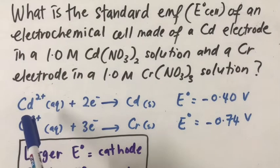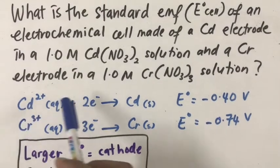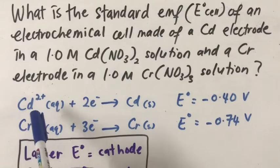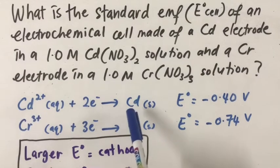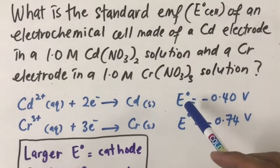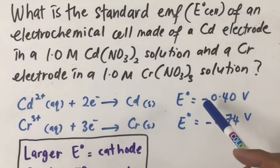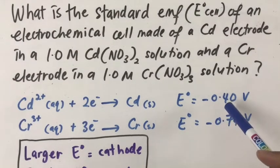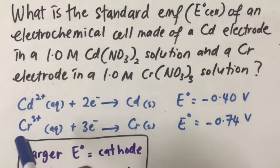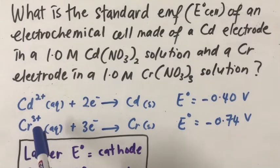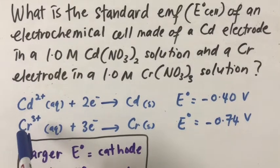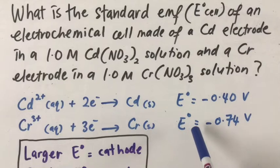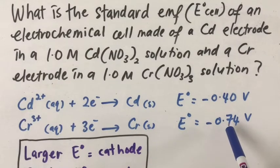We are given here the standard reduction half-reaction for cadmium, where Cd²⁺ becomes Cd, and the E° cell for this half-reaction is negative 0.40 volts. For the standard reduction potential half-cell for chromium 3 plus, E° cell is minus 0.74 volts.